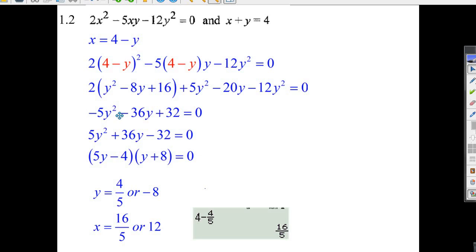I don't like that negative, so I multiply everything by negative 1 to make it a bit easier. You can put this in the quadratic formula, a, b, and c, and you'll get y is 5, 4 over 5, or minus 8.